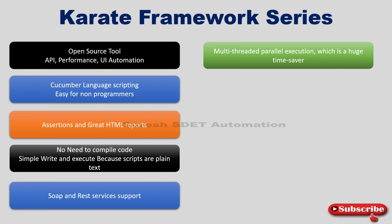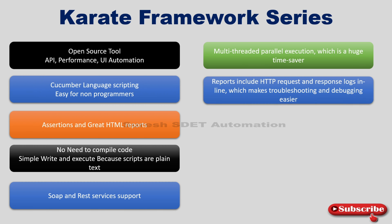Karate has multi-threading and parallel execution capabilities, which help you run test cases in parallel and save a lot of automation time. There are also reports that include HTTP request and response details, which can be used to troubleshoot APIs.